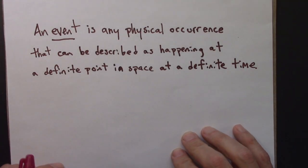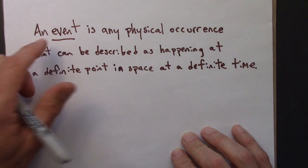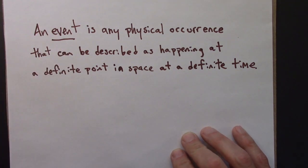The first term I want to introduce is an event. So an event in physics and relativity has a very particular meaning. An event refers to some physical occurrence that can be described as happening at a definite point in space and at a definite time.